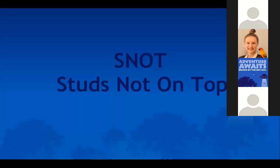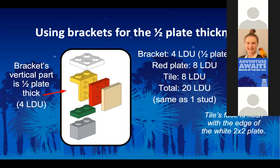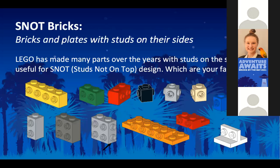Now that we've gotten into SNOT — Studs Not On Top — let's talk about some more. SNOT is a building term that means the studs are pointing to the side, down, or some other direction other than up, most commonly to the side. Here's a way you can use what we've just seen to build a stud-sideways tile that will be flush with the bricks and plates around it. This is one way you can embed a control panel into a wall of your spaceship, though it does require the wall to be two studs thick.